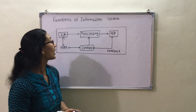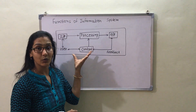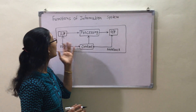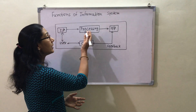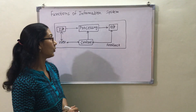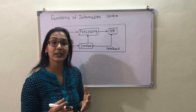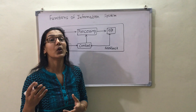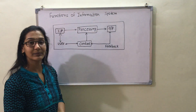The last function is control. Control is the main component of the information system — it controls all other entities like the user, processing, and output. Control includes decision making and auto control. Thank you.